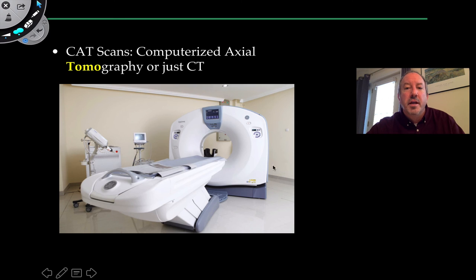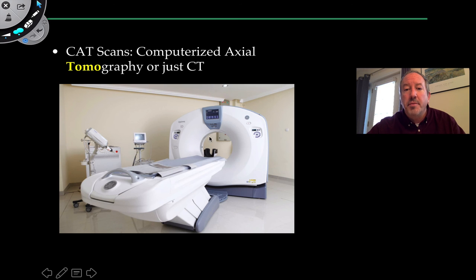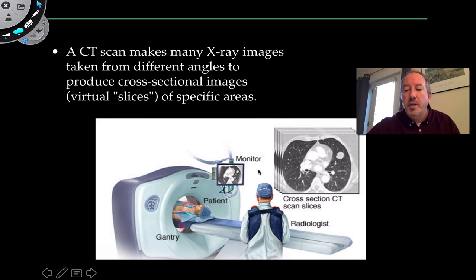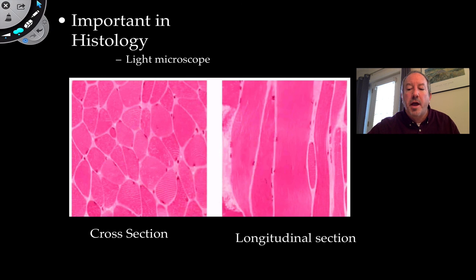CT scans use X-rays to take pictures from different angles in virtual slices. The patient is placed in the scanner, and X-rays create cross-sections you can view on screen. It's important for a radiologist to know their planes. These techniques are also important in the study of histology and tissues.